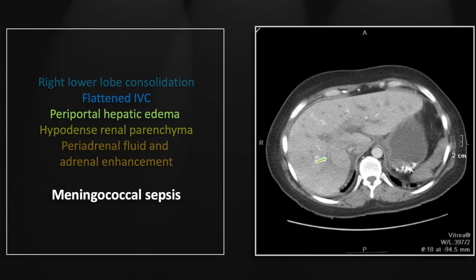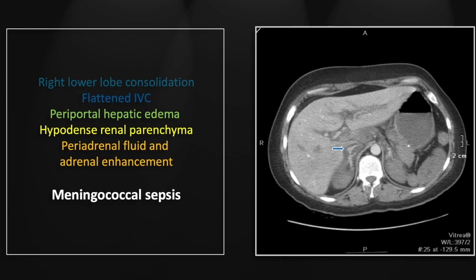In addition, probably related to underperfusion but possibly also related to some degree of hepatitis, there is periportal hepatic edema. Lower still, we again see the flattened IVC. There is periportal edema in the liver and marked underperfusion of the kidneys, which are showing essentially no contrast enhancement at all.